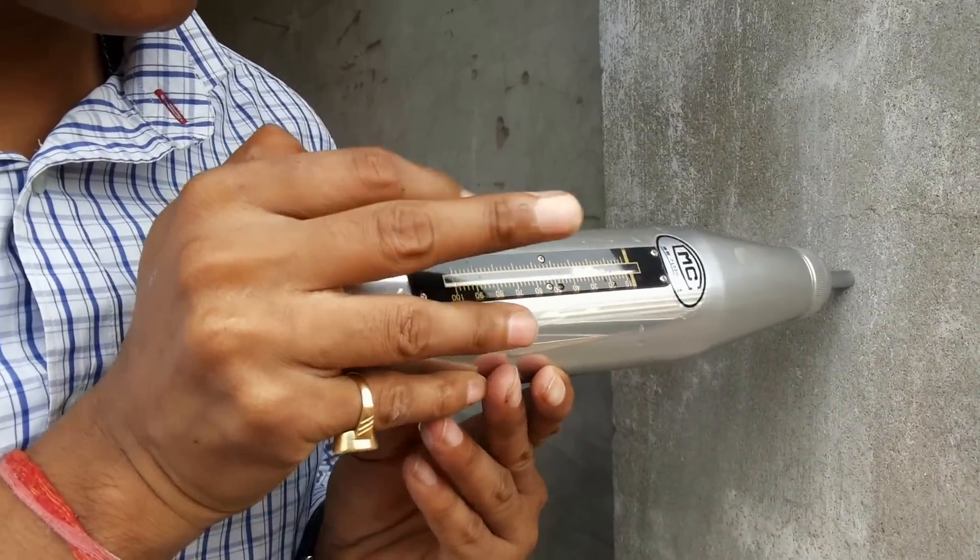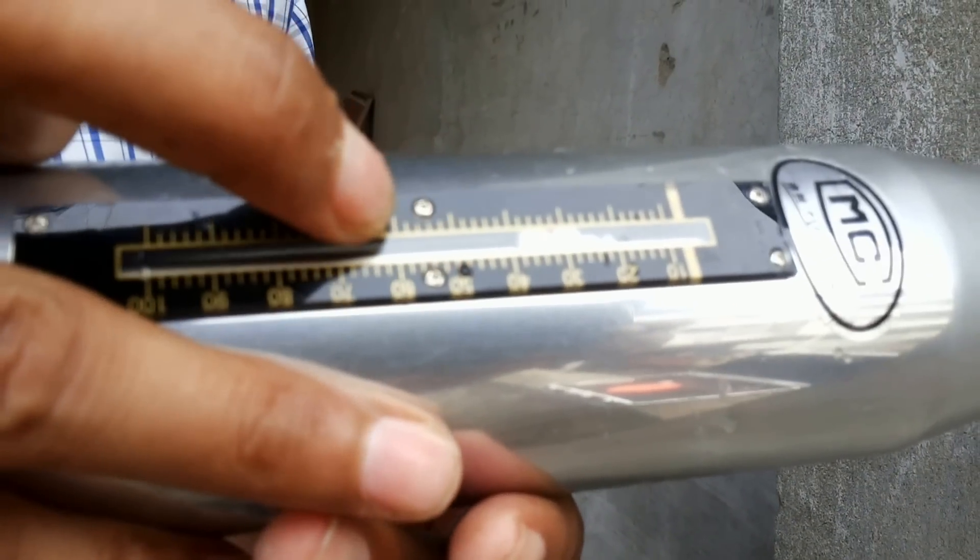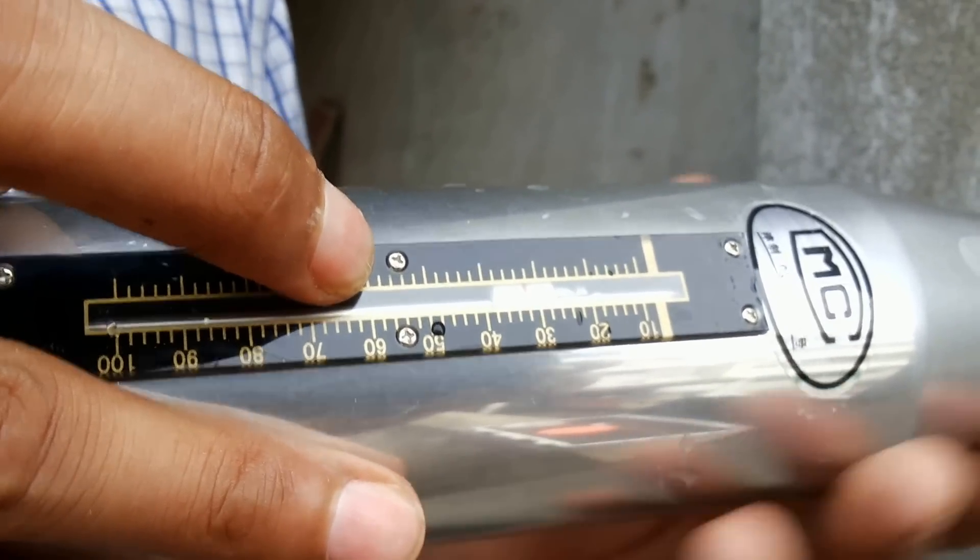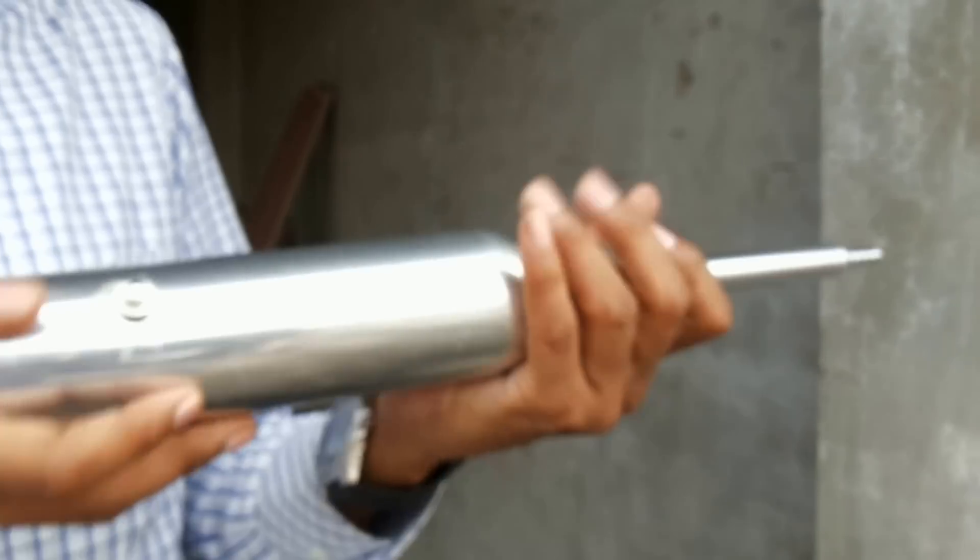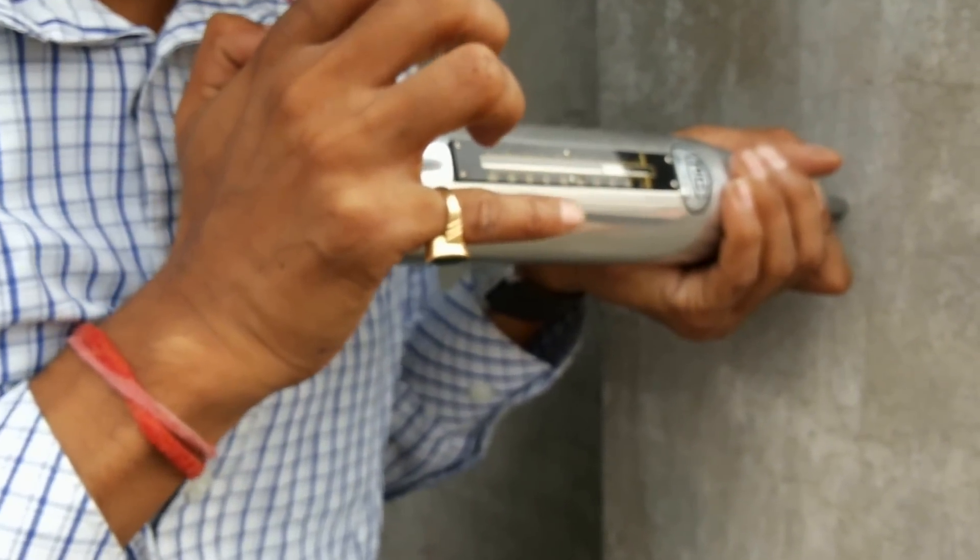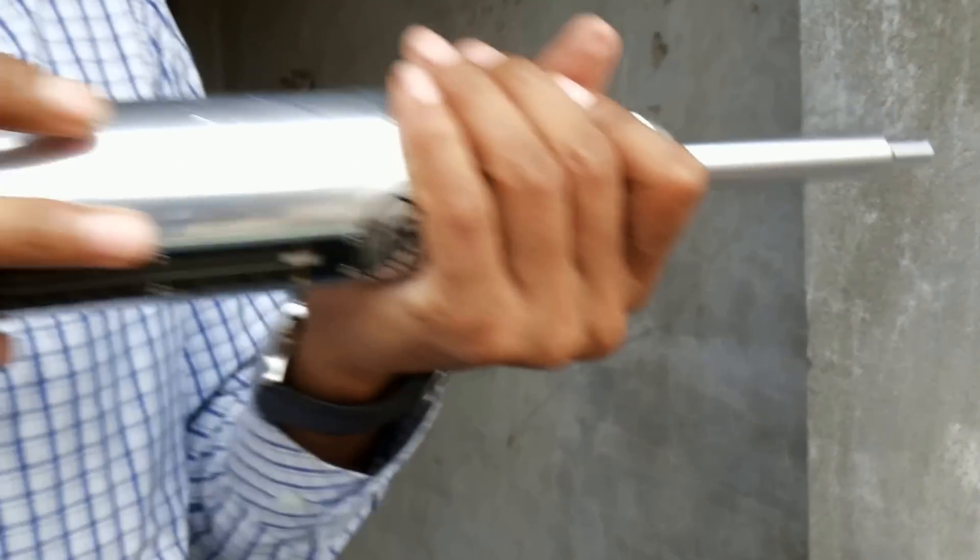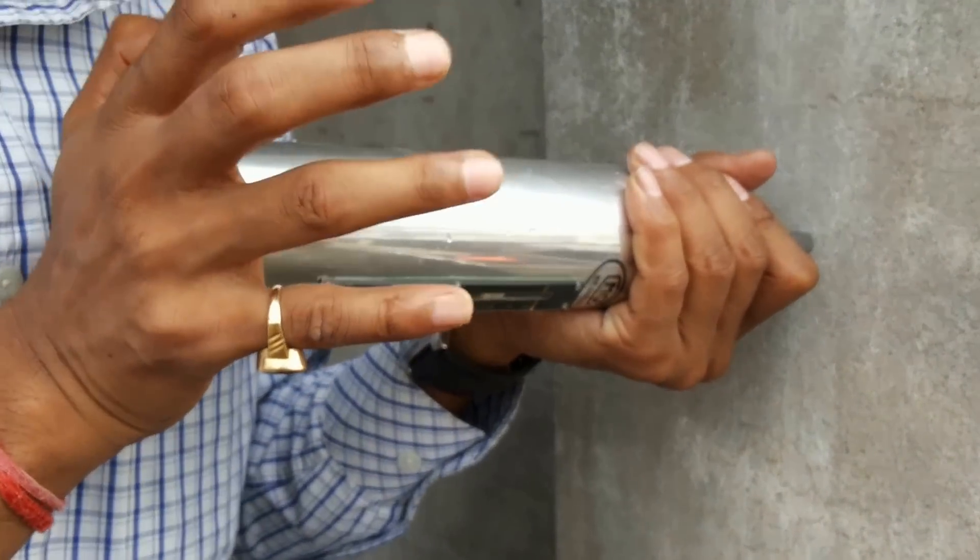This shows the rebound number, that is 32. Once again, at the test point, this is 32. Take 10 number of samples.